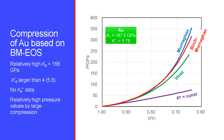The third example is gold (Au). K0 is 167 GPa, which is similar to MgO, and K' is 5.8, which is significantly higher than that of MgO. Murnaghan's equation of state and Birch-Murnaghan are still in agreement, while Vinet's equation of state provides much lower pressure, though still higher than the constant-KT equation of state.